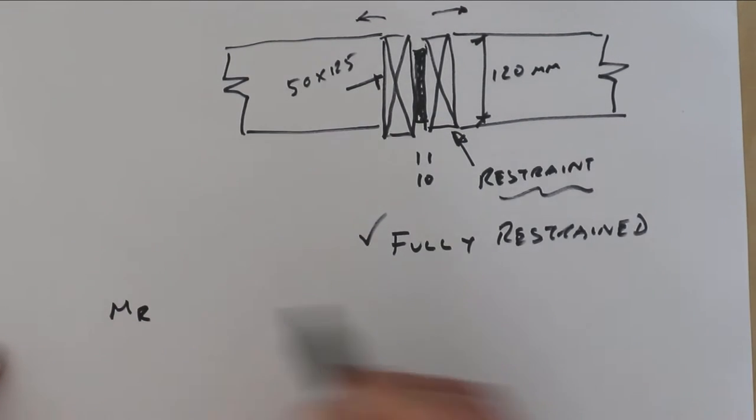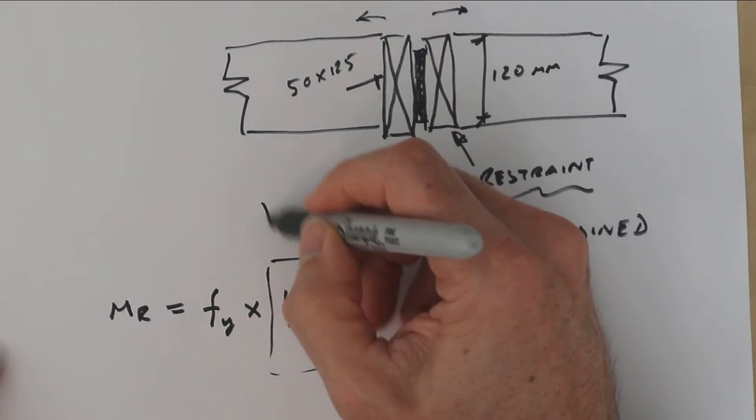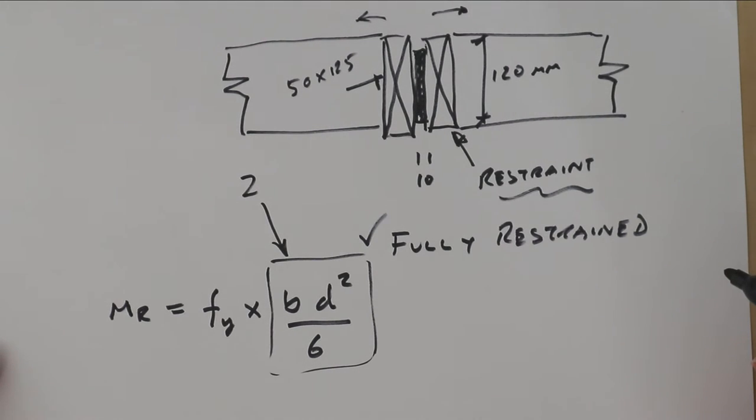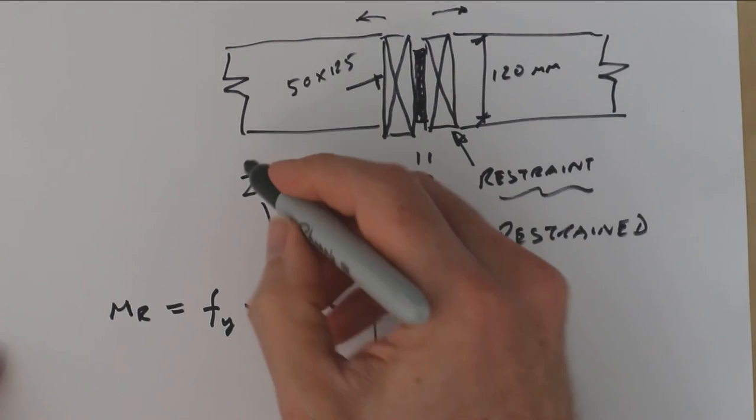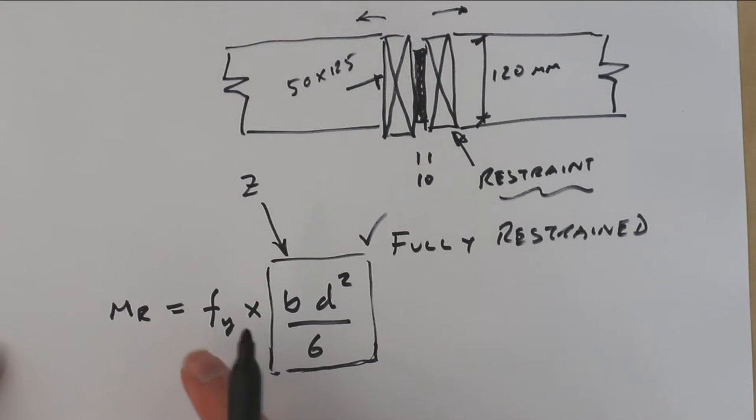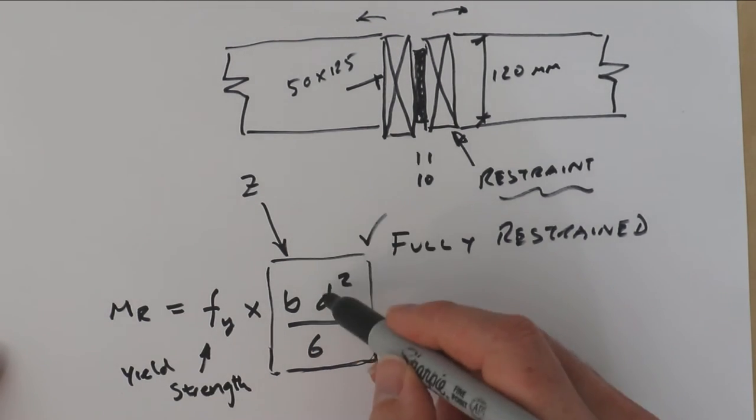If we don't need to worry about buckling, then we can develop the full bending strength of this beam and use a very simple formula for that. The moment resistance is equal to the allowable stress or the yield stress of the steel multiplied by bd² over 6. That little formula here we call z, and you'll probably see that on other videos of mine. That's the allowable stress or the yield stress of the steel. If we're using it in terms of finding out the strength, we'll call it the yield strength, and that's the value of z.